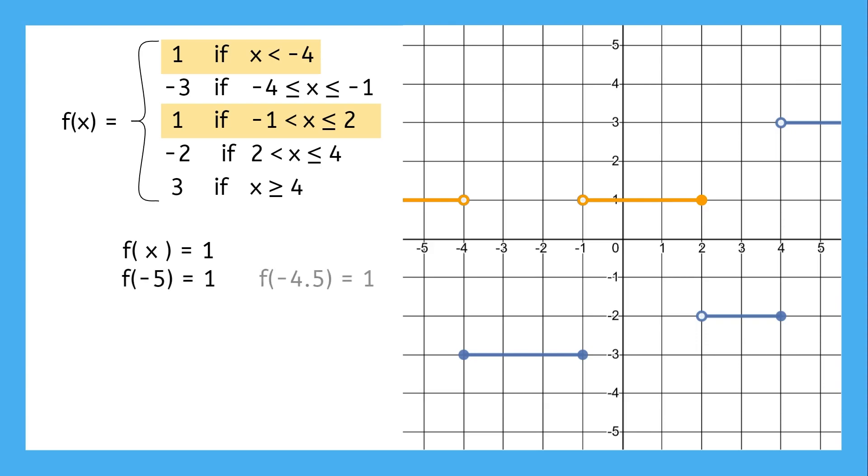We could say negative 5, negative 4.5, or 0, or 1, or 1.5, or 2, or infinitely many other values that fall into these intervals, and they would all be correct answers because each of these inputs gives the same output of 1.